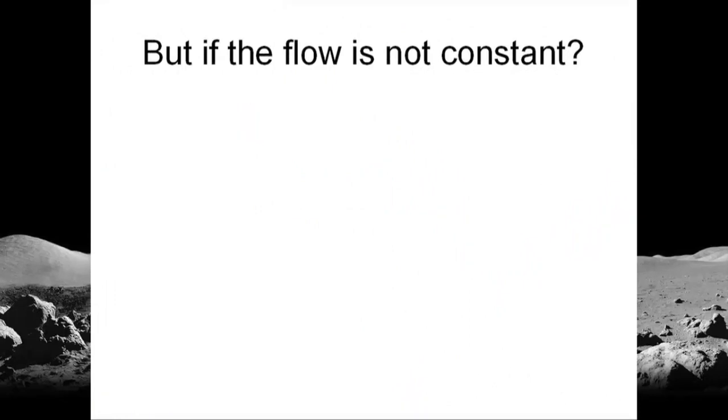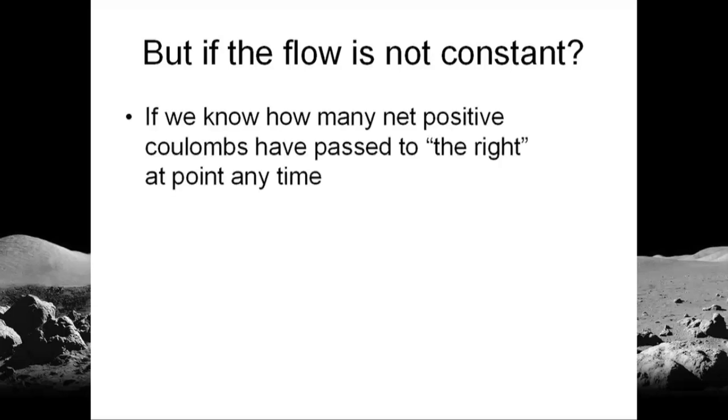All of that is fine. We measure currents as 3 coulombs per second, 10 coulombs per second, 1000 coulombs per second. But what happens if the flow of electricity is not constant? If the current is not a constant one, sometimes it's higher, sometimes lower, sometimes may even flow in the opposite direction.